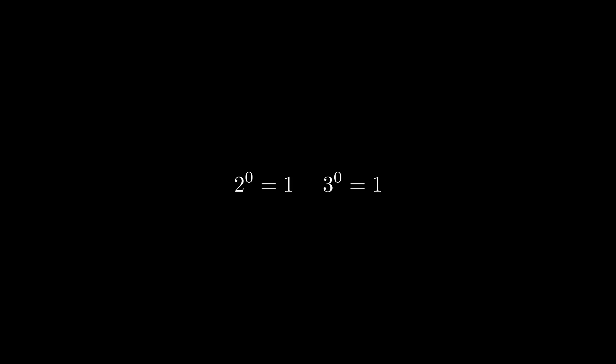So the zeroth root doesn't make sense in this way. If we apply the rule from before, we would expect that the zeroth root of 1 is 2, also the zeroth root of 1 is 3, which is clearly not consistent. How can the zeroth root of 1 be both 2 and 3 at the same time? It doesn't make sense.